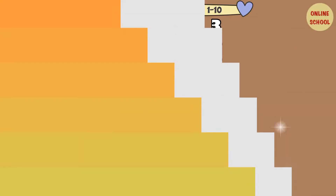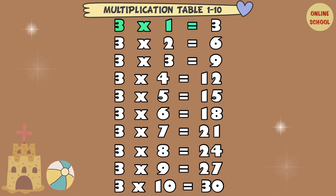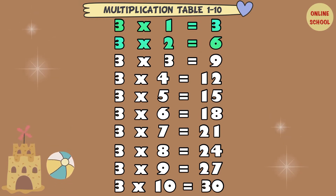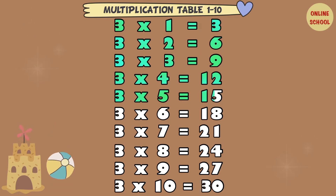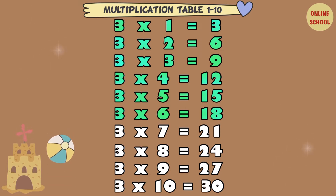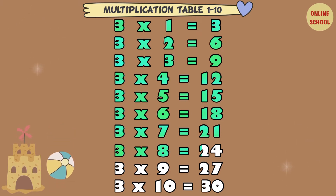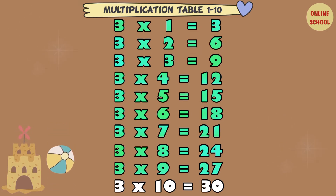3 x 1 equal 3. 3 x 2 equal 6. 3 x 3 equal 9. 3 x 4 equal 12. 3 x 5 equal 15. 3 x 6 equal 18. 3 x 7 equal 21. 3 x 8 equal 24. 3 x 9 equal 27. 3 x 10 equal 30.